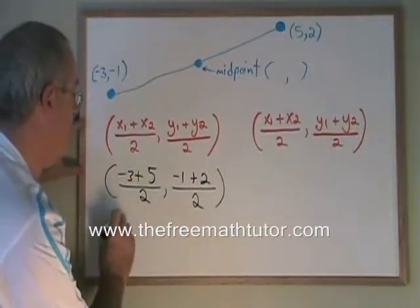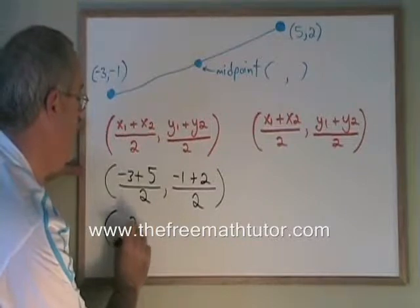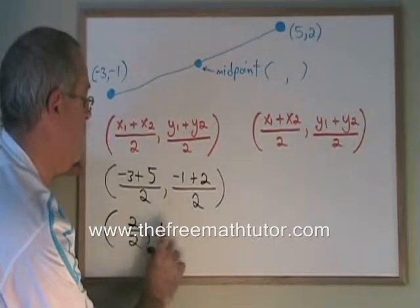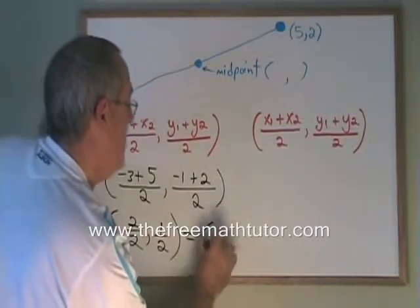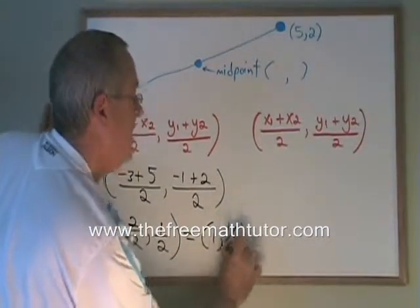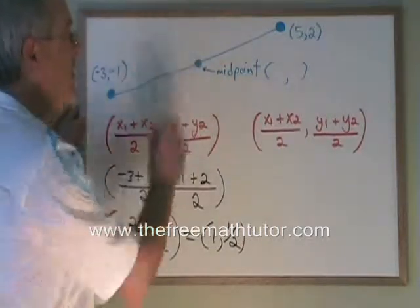This simplifies to give us 2 over 2, 1 over 2, and 2 over 2 is equal to 1. So our final answer is 1 comma 1 half are the x and y coordinates of the midpoint of this line.